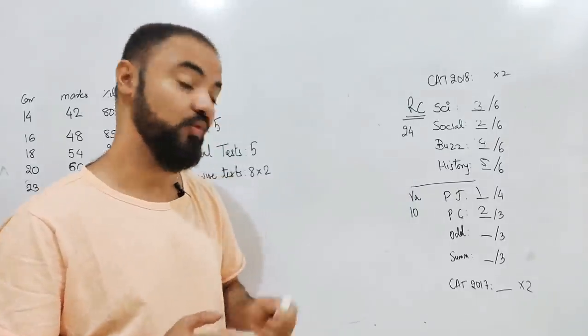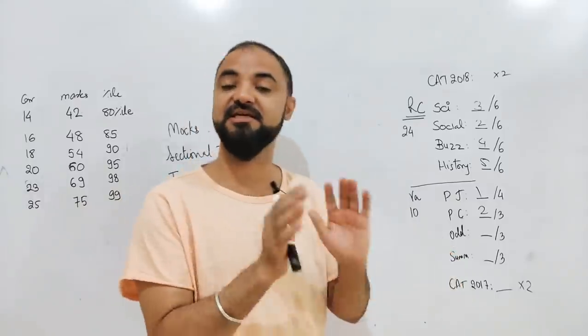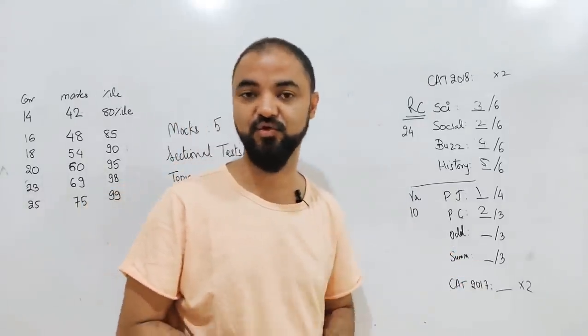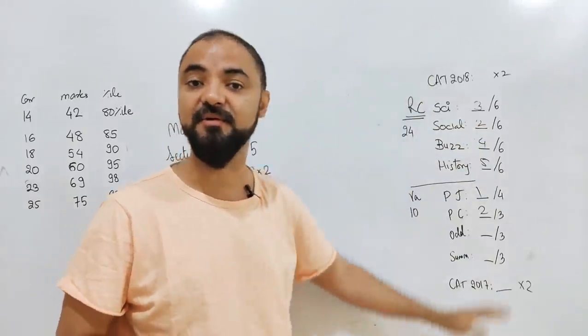Last, 10th day, we'll do 2017 CAT paper, two slots again, only verbal section, section-wise. There's a mock available. You can give only the verbal section and stop. It's fine, ignore the other parts.